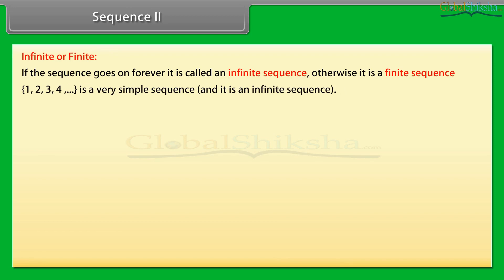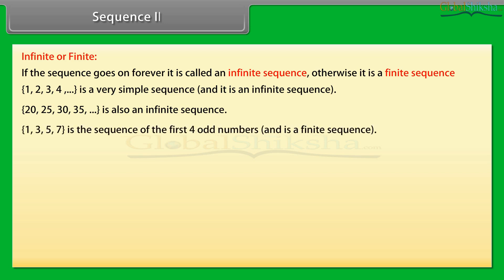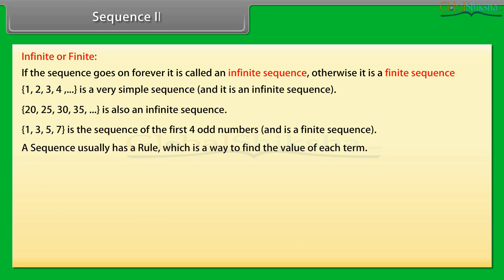For example: 1, 2, 3, 4, and so on is a very simple sequence and it is an infinite sequence. 20, 25, 30, 35, and so on is also an infinite sequence. 1, 3, 5, 7 is the sequence of the first 4 odd numbers and is a finite sequence.